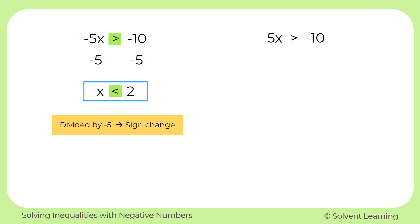And since the coefficient of x this time is a positive 5, we're dividing by a positive 5 on both sides. And dividing by a positive number does not cause the sign to change. So our solution will be x is greater than negative 2. So remember, if we're dividing by a negative, the sign changes. But dividing by a positive 5 causes no sign change. It stays the same.